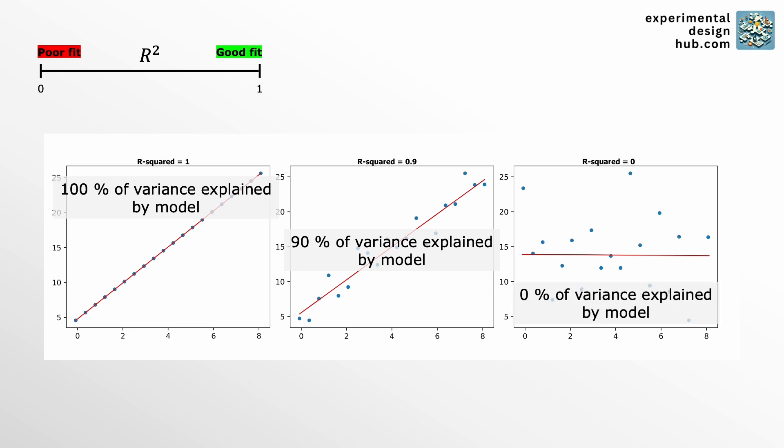An R squared of 0, on the other hand, means that your model explains nothing. It's no better than just using the average of the observed data for predictions. And if you're somewhere in between 0 and 1, you're capturing a proportion of the variance. For example, if you've got an R squared of 0.9, your model explains 90% of the variation.